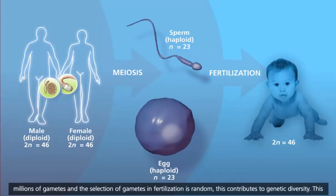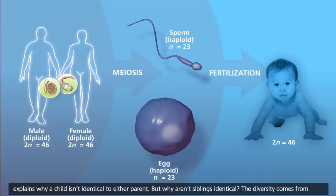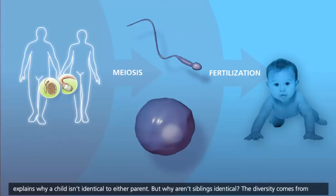Because men and women produce millions of gametes, and the selection of gametes in fertilization is random, this contributes to genetic diversity. This explains why a child isn't identical to either parent.